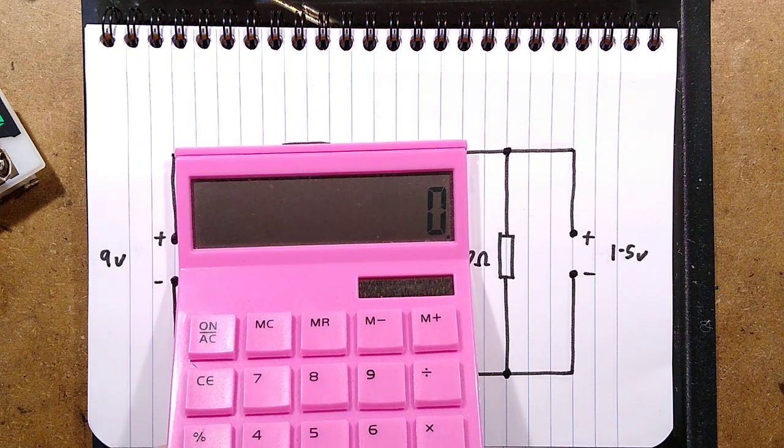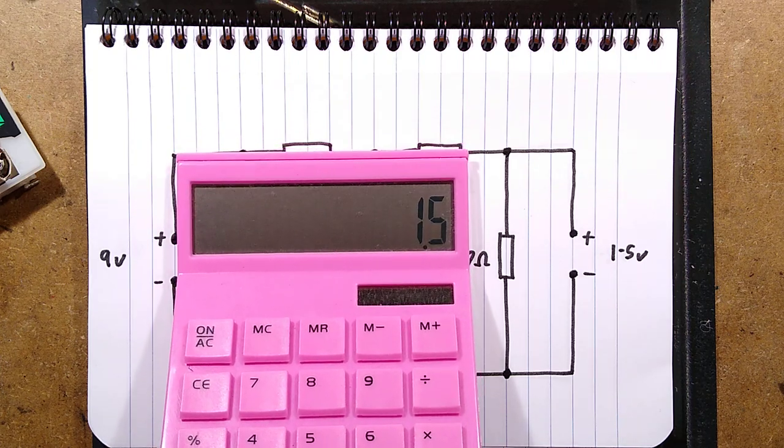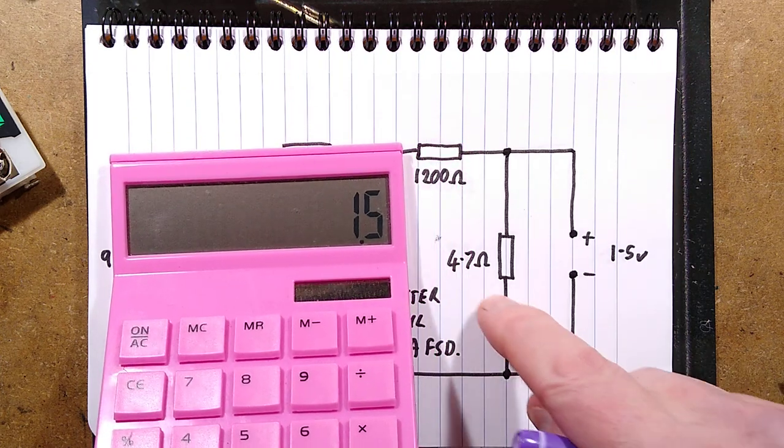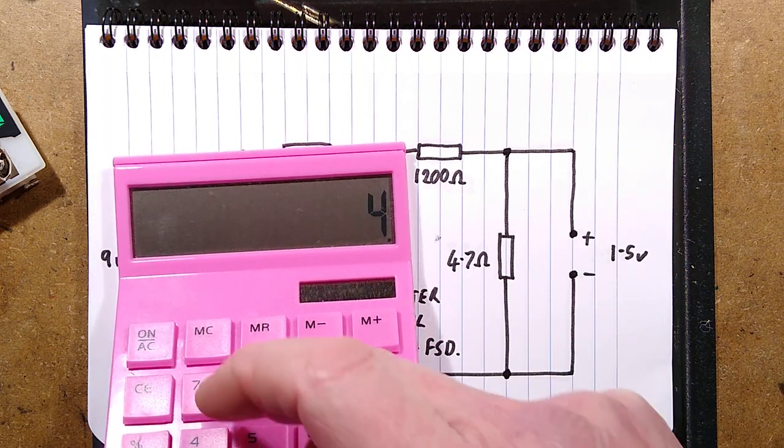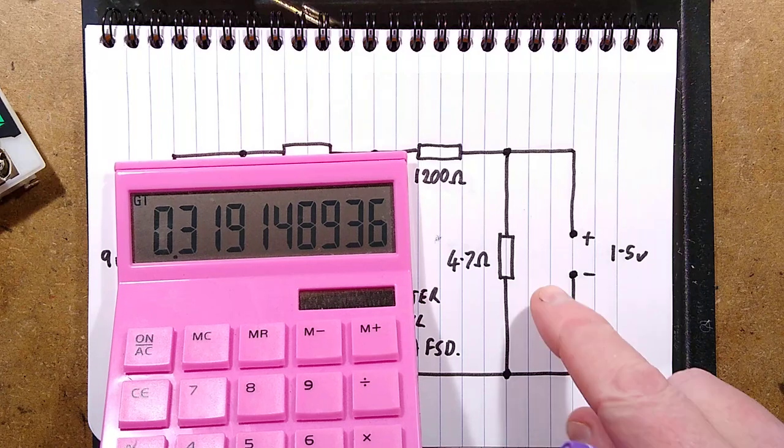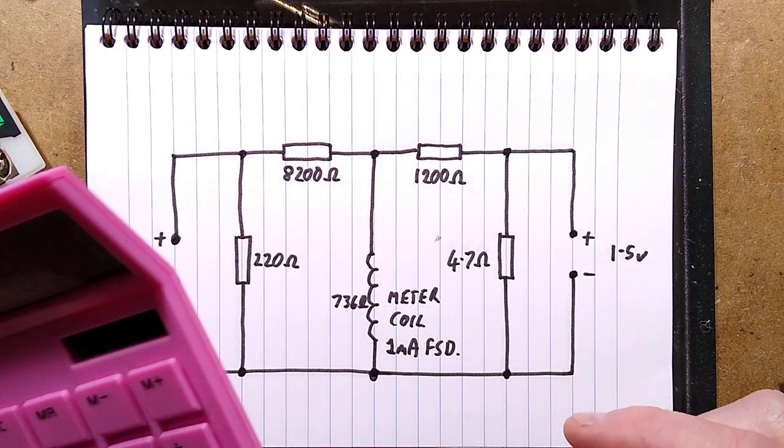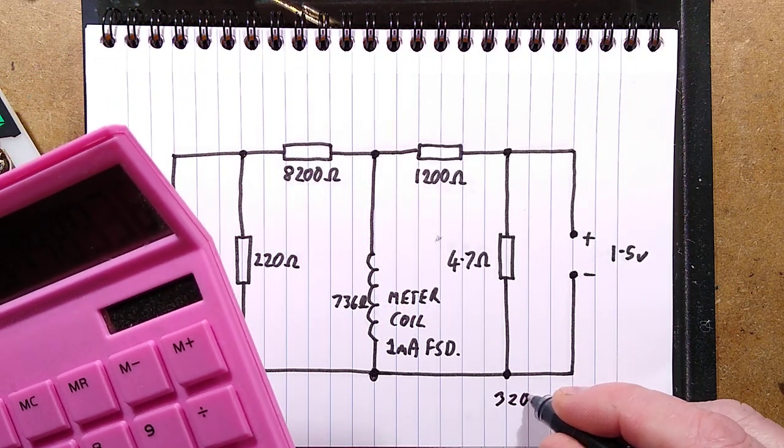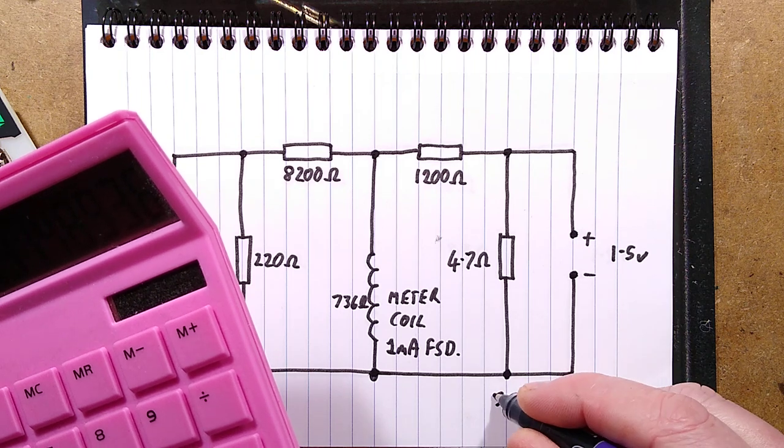I equals V, a freshly charged battery, 1.5, divided by the 4.7 ohms. It would be 320 milliamps. So I'll just write 320 milliamps there.